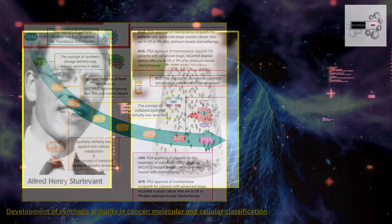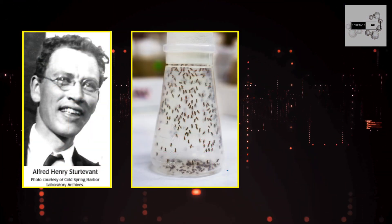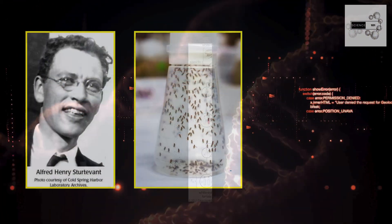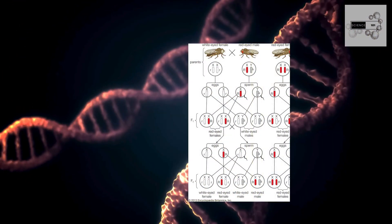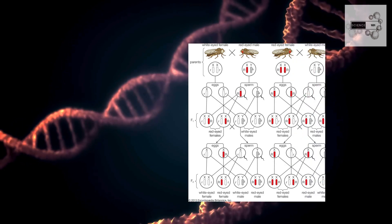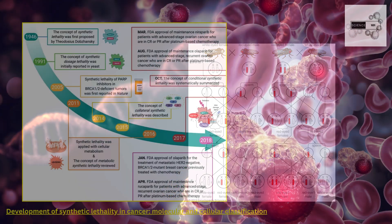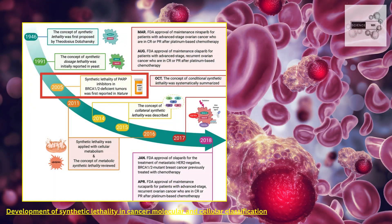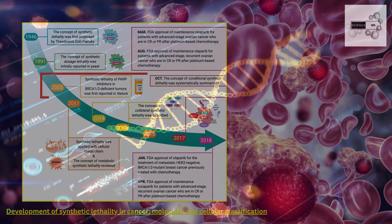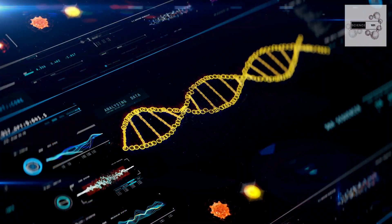Pioneering geneticists like Alfred Sturtevant observed that mutations in specific fruit fly genes, when combined, resulted in lethality. This concept laid the groundwork for the application of synthetic lethality in human diseases decades later.